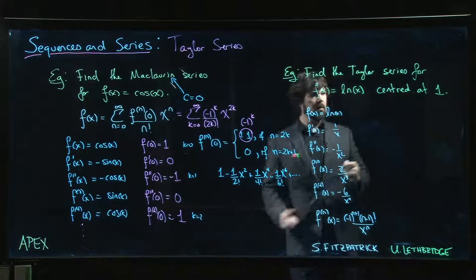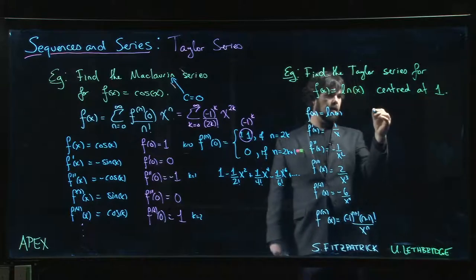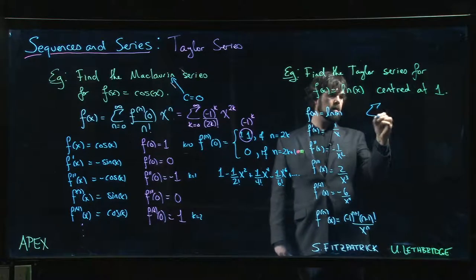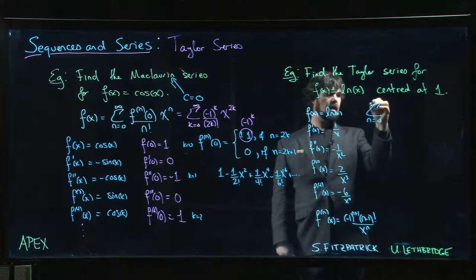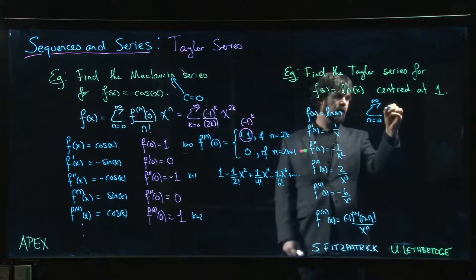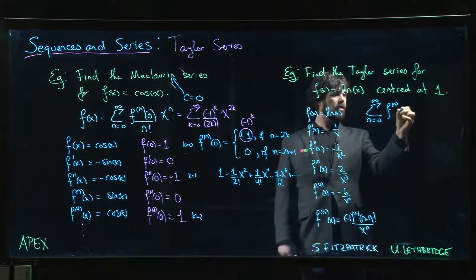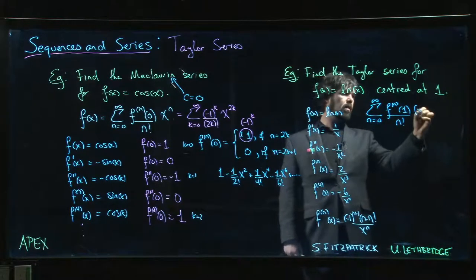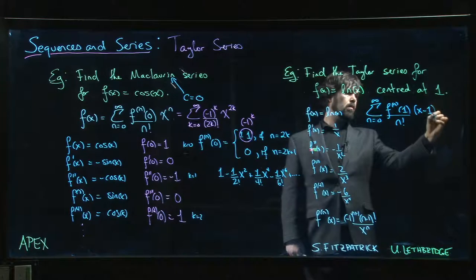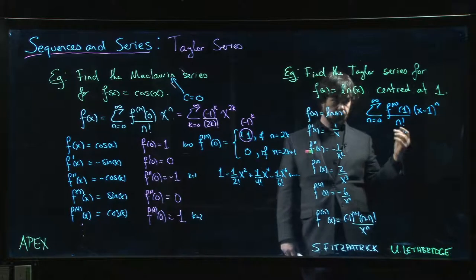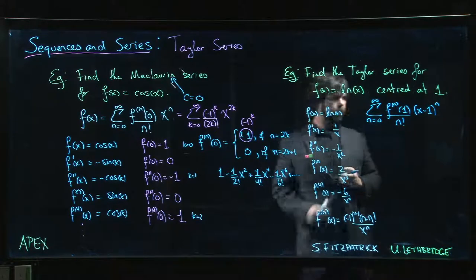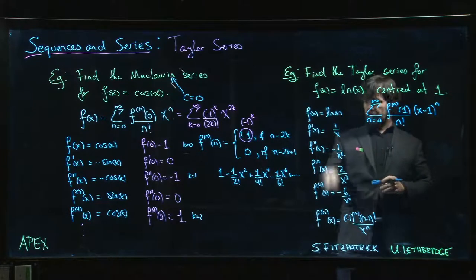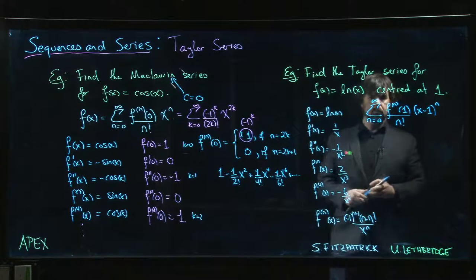Now that we have that formula, we can say, okay, we want to center at 1, right? So that means we're looking for a polynomial that looks like this. n going from 0 to infinity, nth derivative at 1 over n factorial, x minus 1 to the n. So we're looking for that. So we got to evaluate all of these at 1.